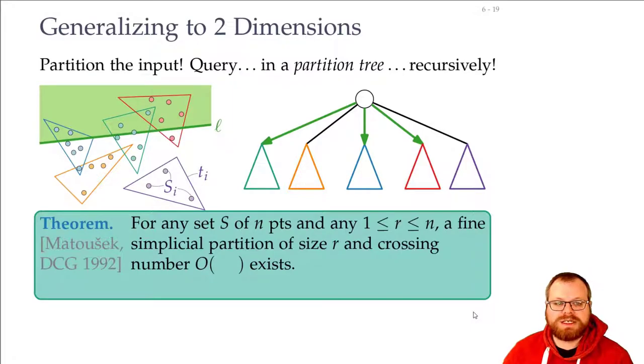And in fact, there is a theorem by Matousek from 1996 that says you can do this. You can find a simplicial partition that is fine and where the crossing number is not too large. For any set of n points and for any r between 1 and n, you can find a simplicial partition of size r. What do you think the crossing number here is? It's actually order of square root of r. We will not prove this theorem here. This is very technical. You can look at it in the original paper if you're interested. We will just use this as a black box.